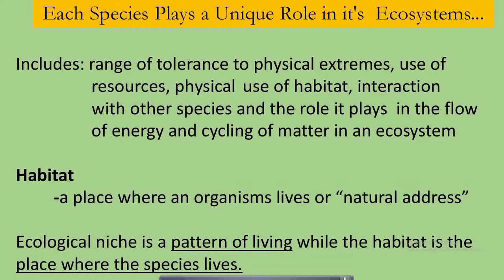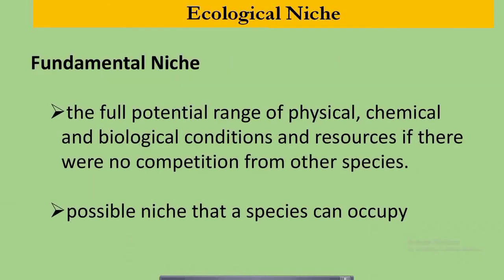Ecological niche is different from habitat. As discussed previously, habitat is a place where an organism lives, or an organism's natural address. Ecological niche is a pattern of living of a species, while habitat is the place where the species lives. There are two kinds of ecological niche: fundamental and realized niche. Fundamental niche is the full potential range of physical, chemical, and biological conditions and resources if there were no competition from other species — the possible niche that the species can occupy.